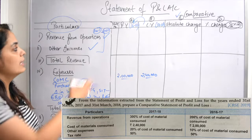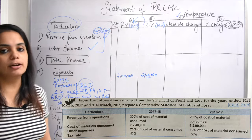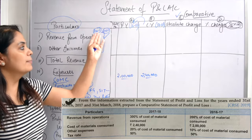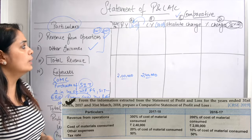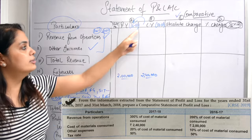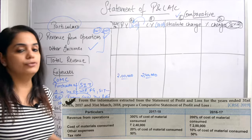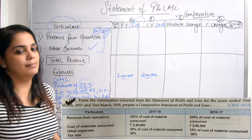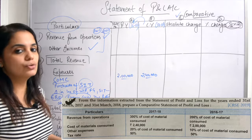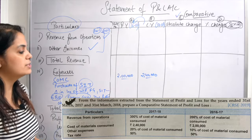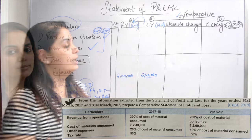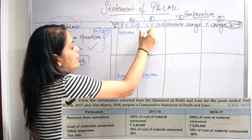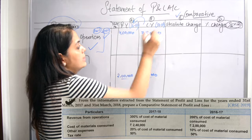You have to calculate 200% of 2 lakhs and 300% of 2 lakhs 40,000 in rough work, which will take some calculation time. So: 200% of 2 lakhs is 4 lakhs, and 300% of 2 lakhs 40,000 is 7 lakhs 20,000.